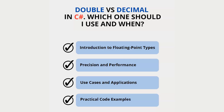What is the difference between double and decimal in C#? Which one should we use and when? In this video I'm going to cover a quick introduction to floating point types, their precision and performance, use cases and applications, and as always I'm going to use practical code examples that demonstrate all their features.